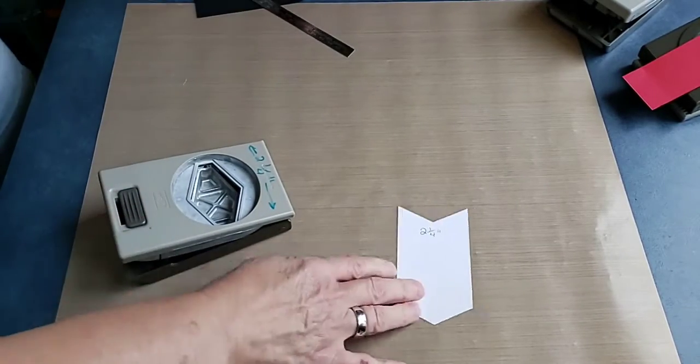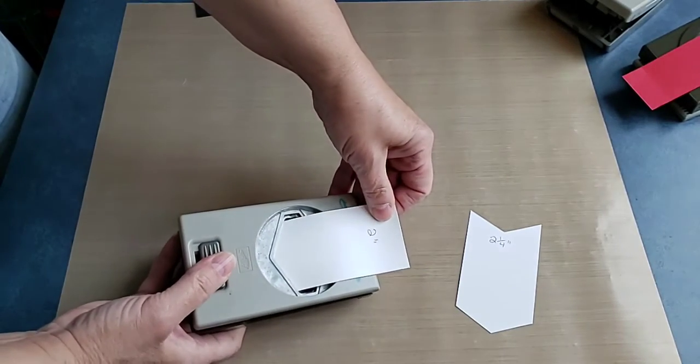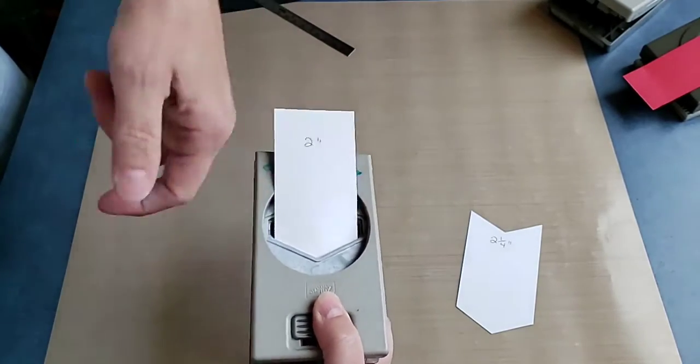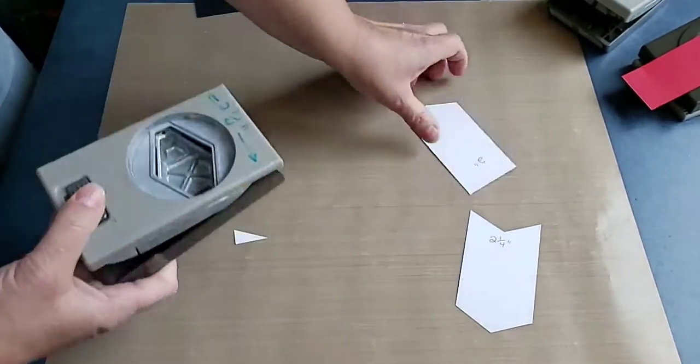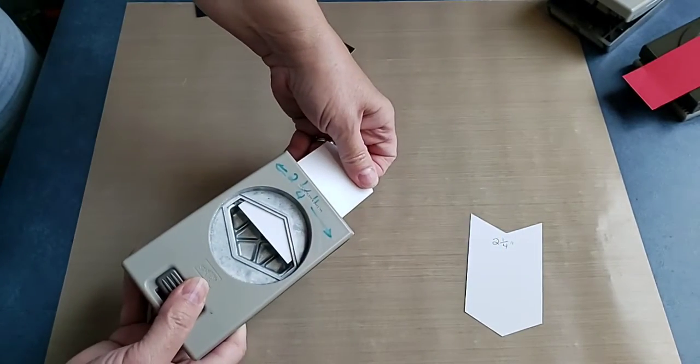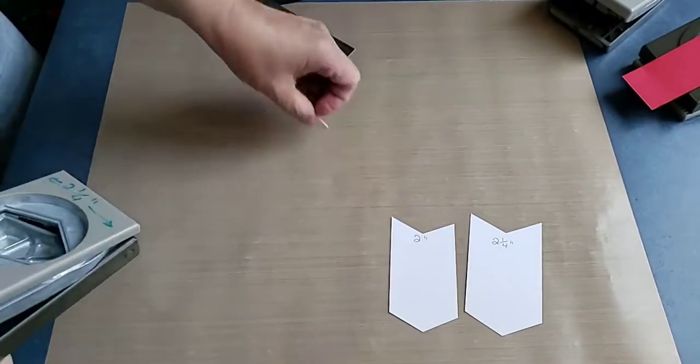And you can get a nice banner end. So try this with all your punches. Try it with different widths of cardstock. Now that I know it's two and a quarter, if I take a two inch piece and center it between here and here, I can do the same. So you can add lots of different things to your projects.